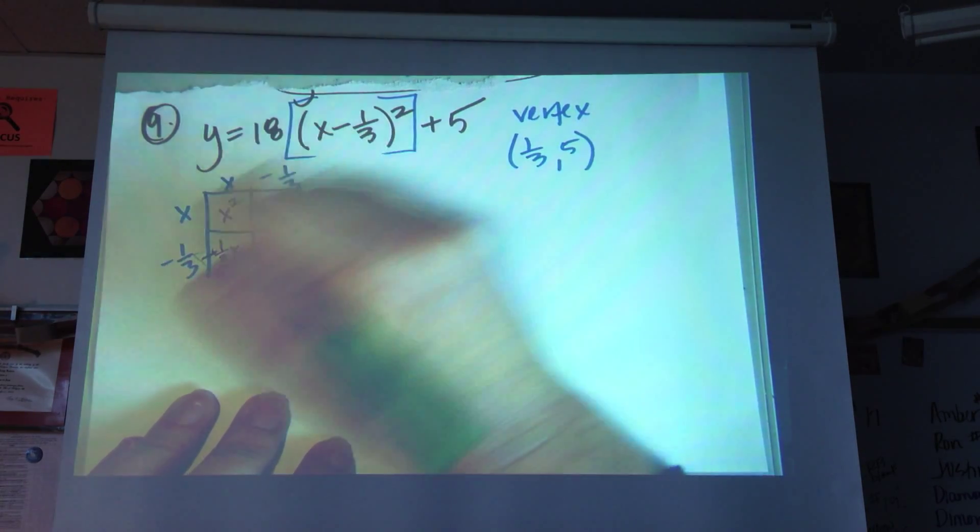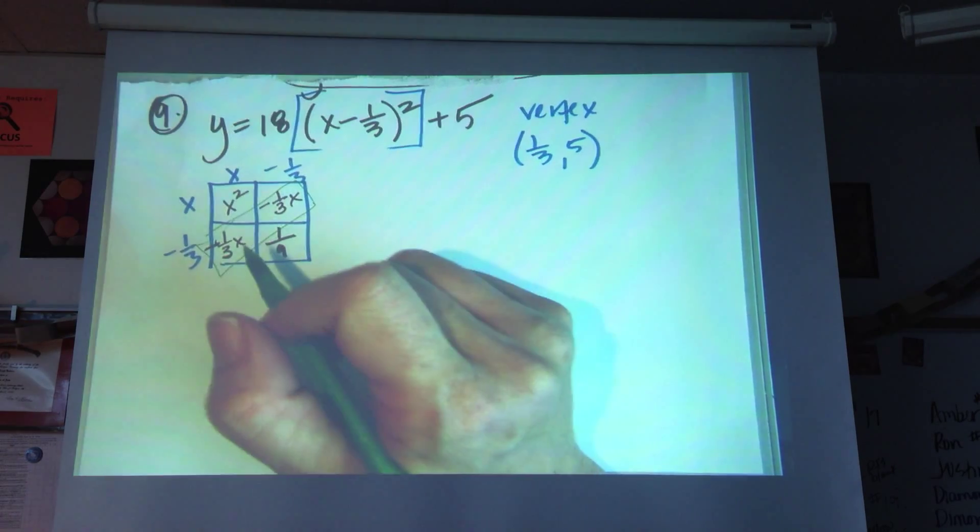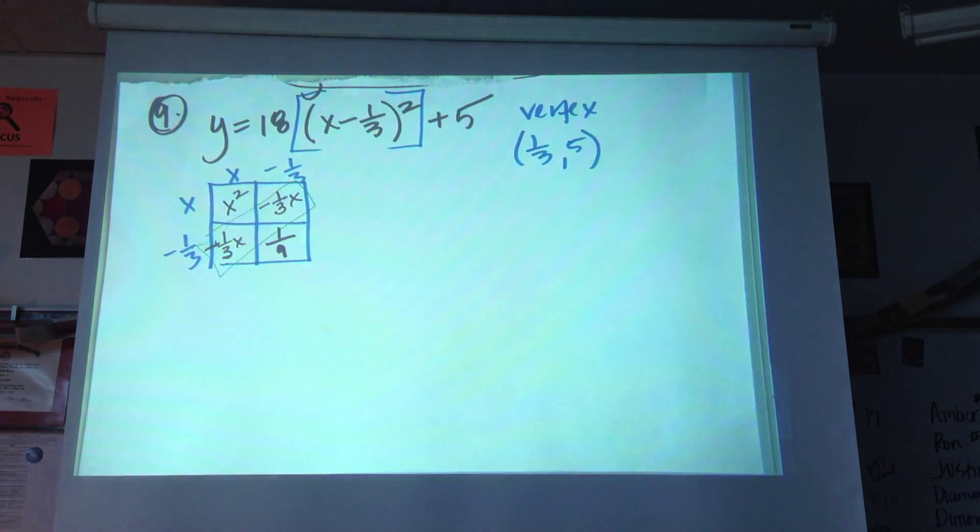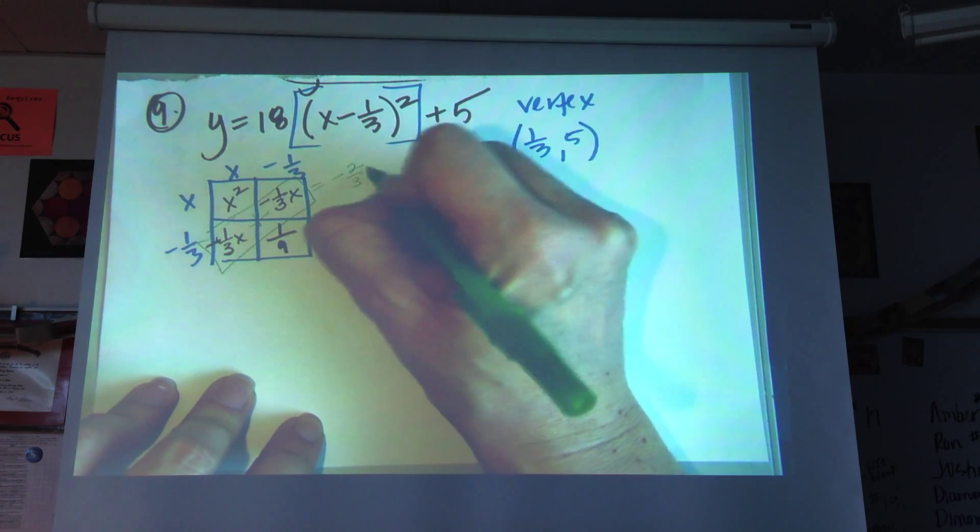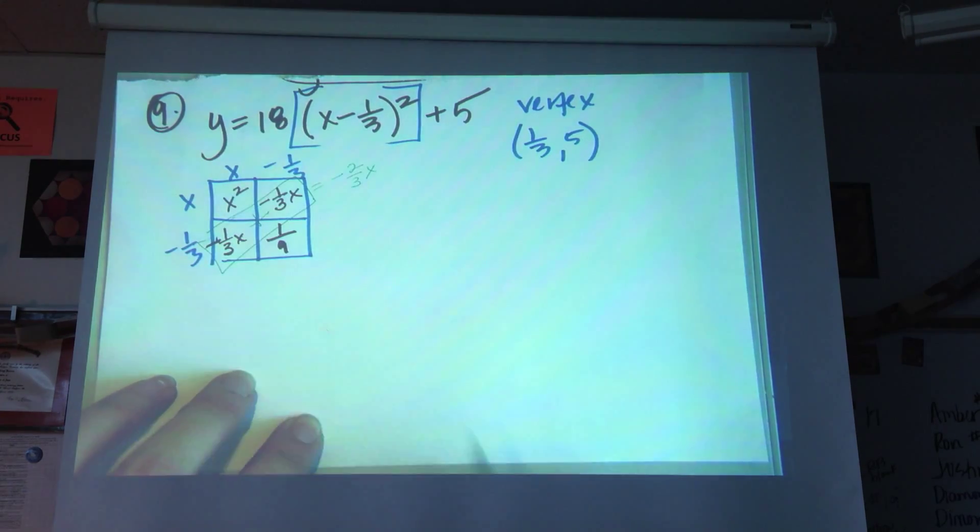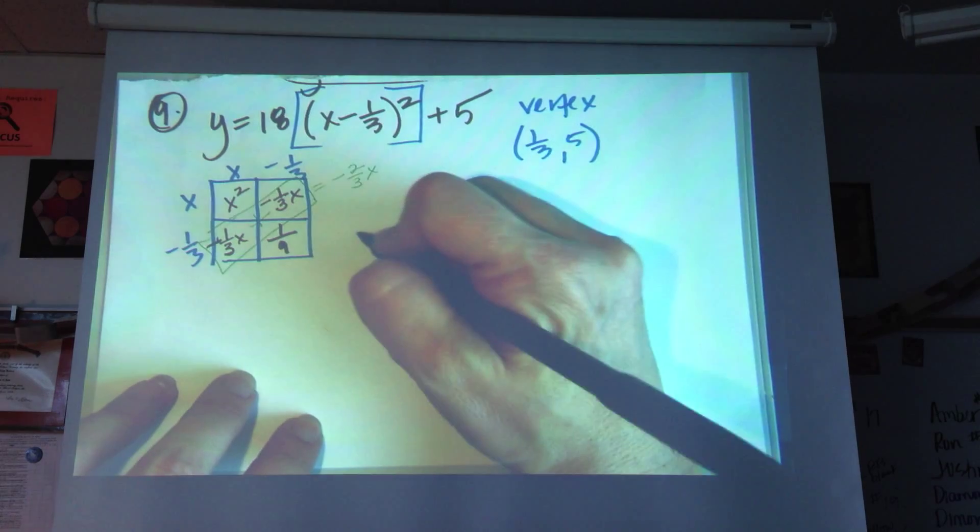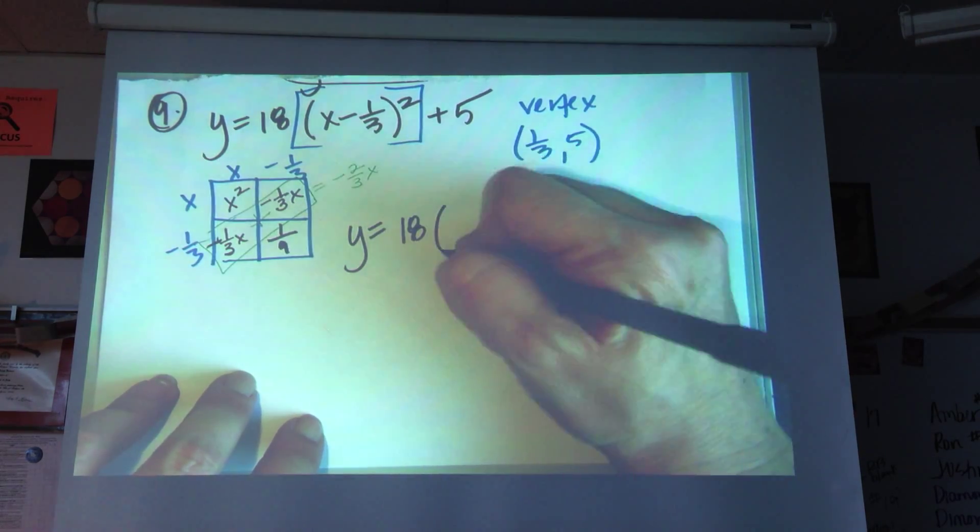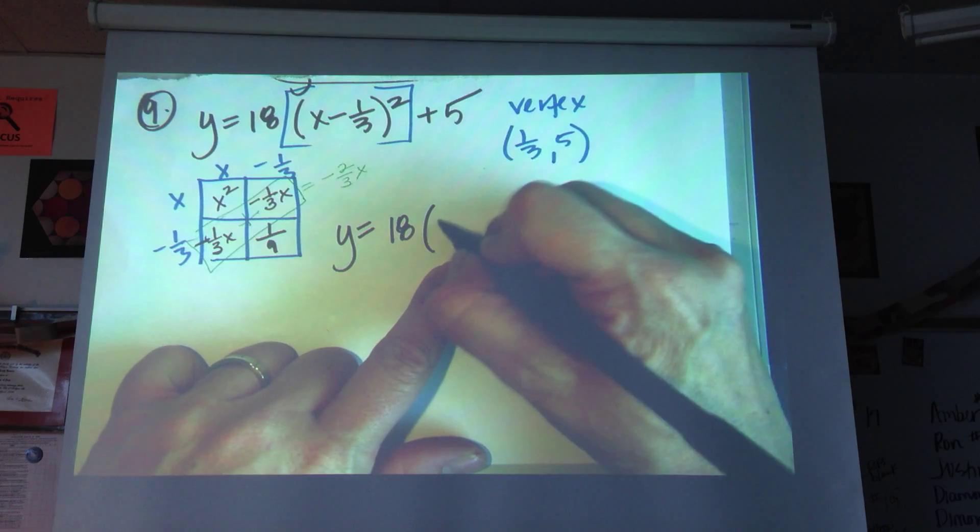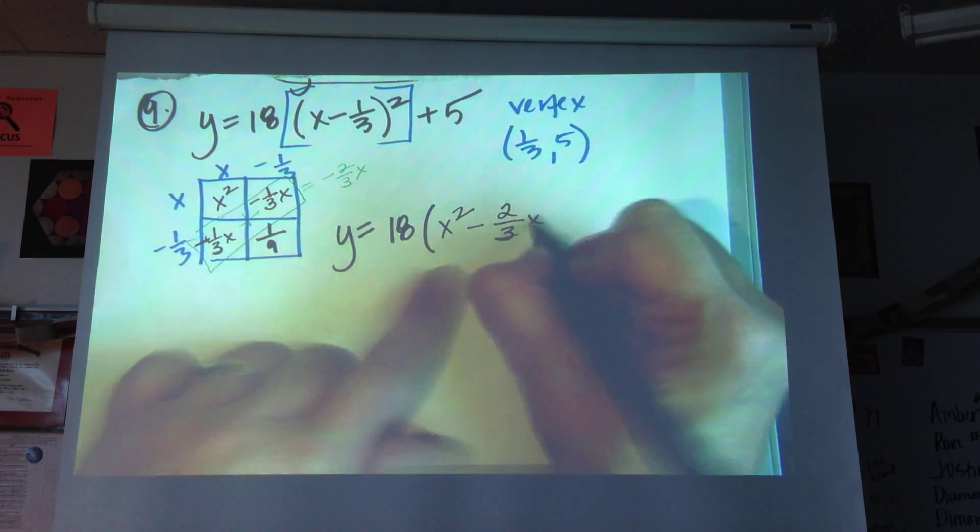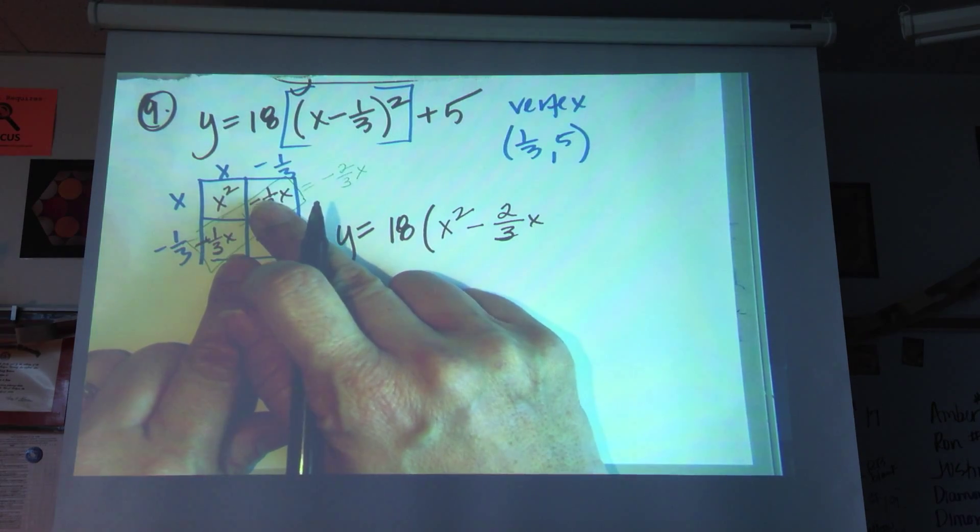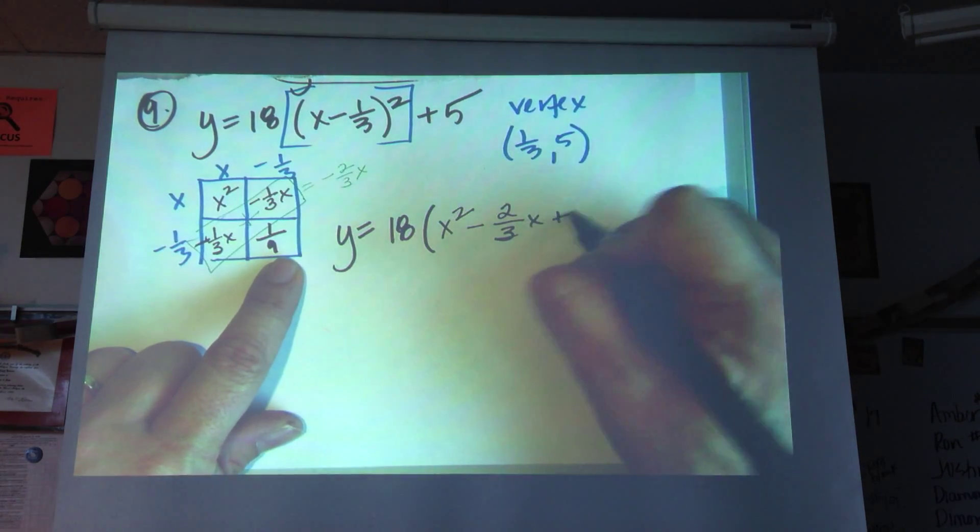When I'm going to go pull this out, I'm in the hole a third of something. How about this? I ate a third of a pizza. And somebody came along and ate the other third of the pizza. So I'm actually down two thirds of a pizza. Right? There's still some left for somebody. y equals 18 times x squared minus 2 thirds x. I had minus 1 third minus another third. Minus 2 thirds x plus a 9th.